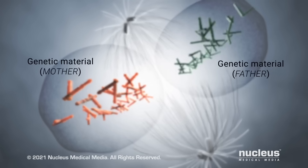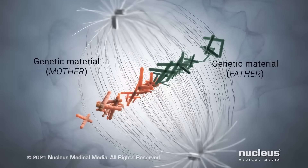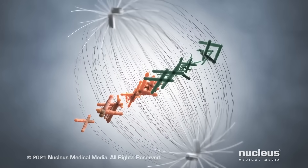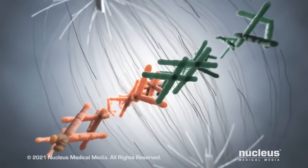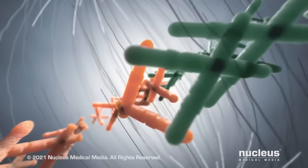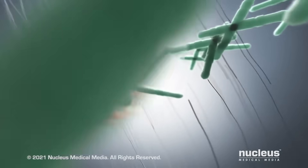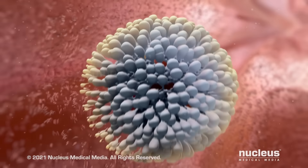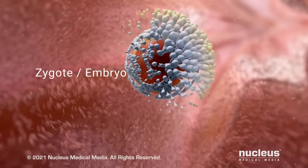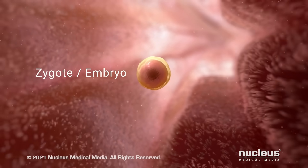During conception, genetic material from the mother and father combine to form a unique genetic code, instantly determining sex, hair color, eye color, and hundreds of other characteristics. This new single cell, called a zygote, or embryo, is the beginning of a new human being.